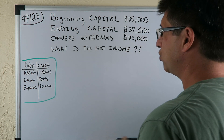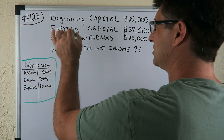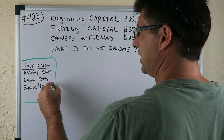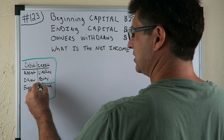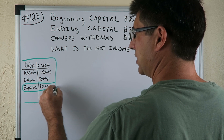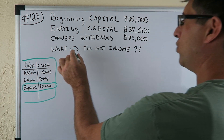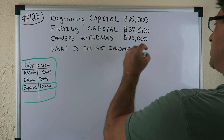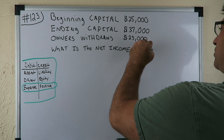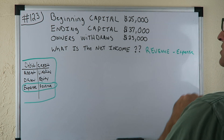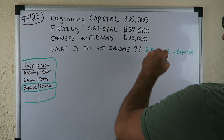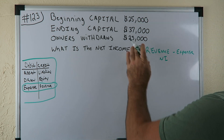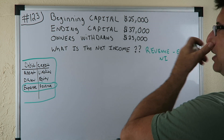DC Adler has a lot of the stuff we're using here. Revenue minus expenses equals net income — we're gonna need that because this question wants to know what the net income is. So net income is revenue minus expenses.